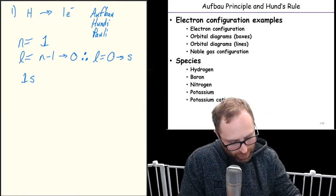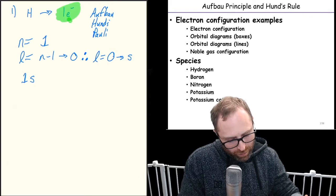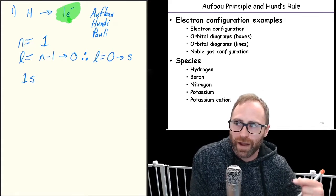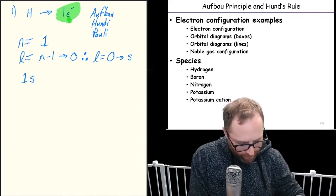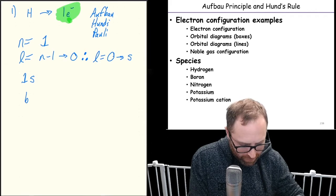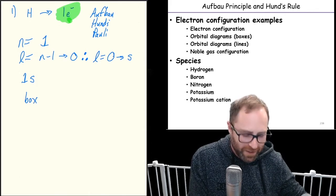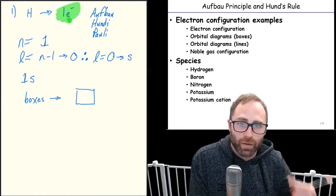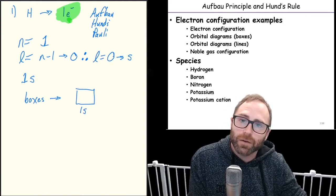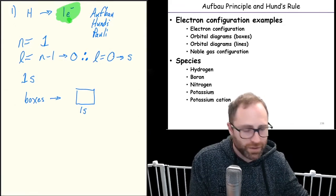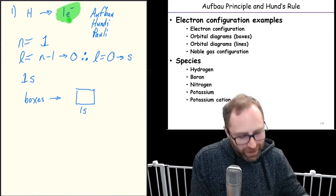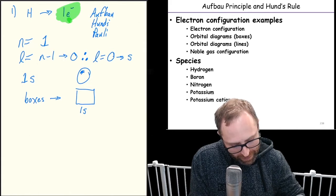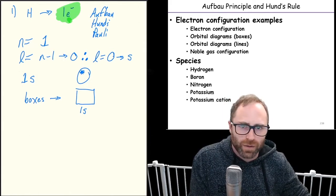L by definition is n minus one all the way through zero. Since n equals one, l has to equal zero for hydrogen, which gives us an s orbital. So we've got a 1s orbital for hydrogen.